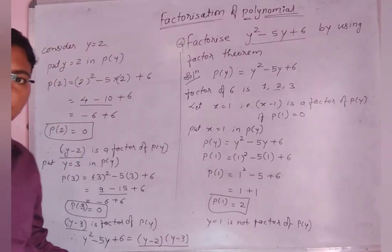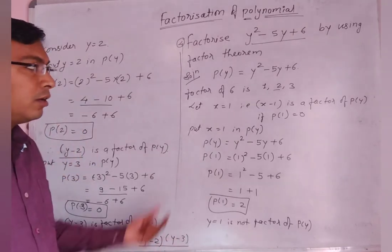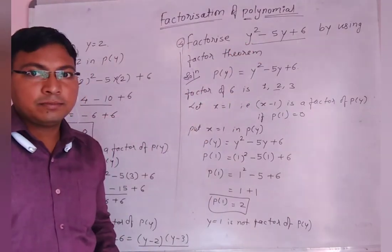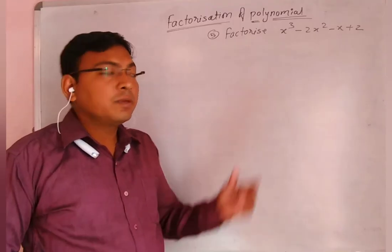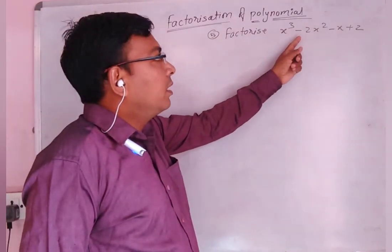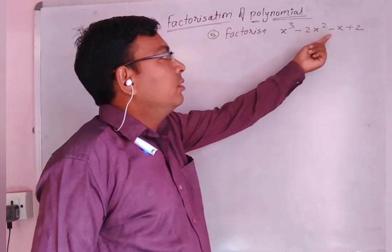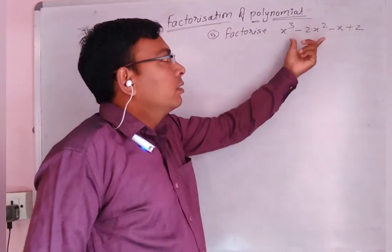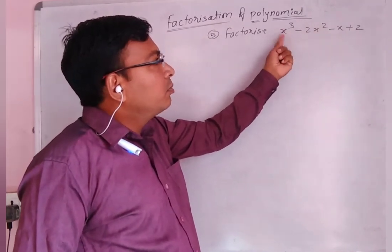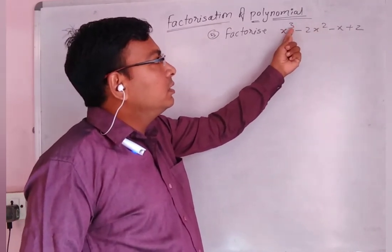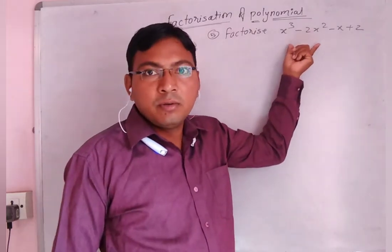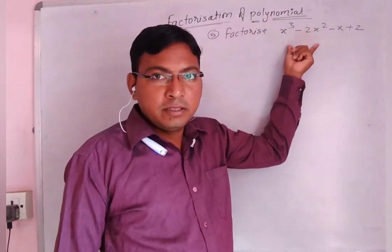These two are the factors of this polynomial. Now, fifth problem: Factorize x cubed minus 2x squared minus x plus 2. The degree of this polynomial is 3, so we will find the factors of this cubic polynomial.